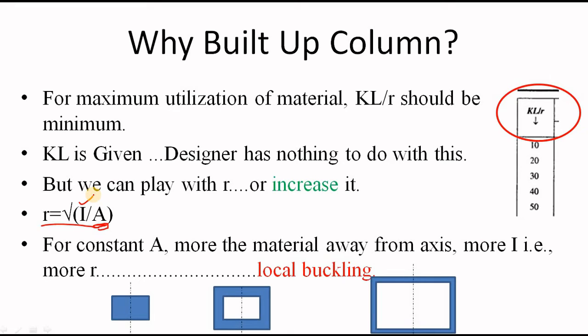Now, how the I value or the moment of inertia about any axis can be increased? Well, if you distribute the material away from the axis, moment of inertia will increase. And eventually, your radius of gyration will also increase.